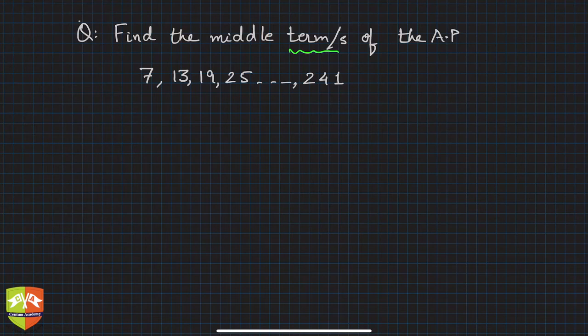If n is odd, that is number of terms is odd, then there will be only one middle term. If the number of terms is even, then there will be two middle terms. That is what we learned. Hence, since it is hidden in the question, they have said term slash s, so it could be one term or two terms of the AP.